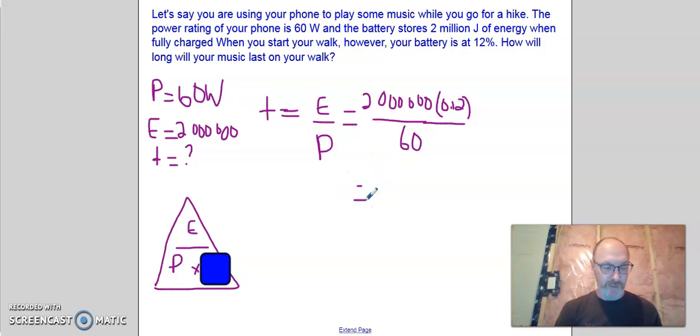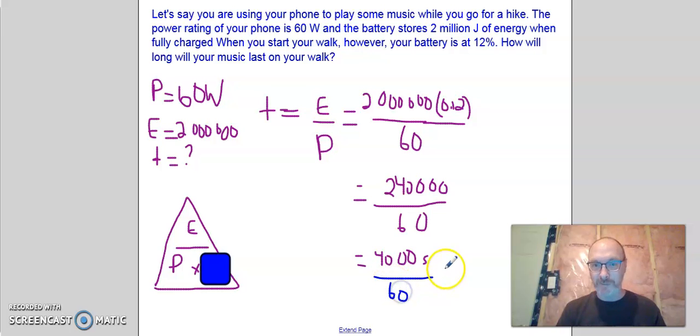So when we put that into our calculator, 2,000,000 times 0.12 gives me 240,000 joules of energy. And then we divide that by the 60 watts. And again, put that into our calculator. 240,000 divided by 60. And that gives me 4,000 seconds. And what's that in minutes? Well, to convert that to minutes, you would have to divide that by 60, since there's 60 seconds in a minute. And when we do that, we get 66.6 repeating minutes. So you could walk for over an hour and listen to your music on this particular hike.